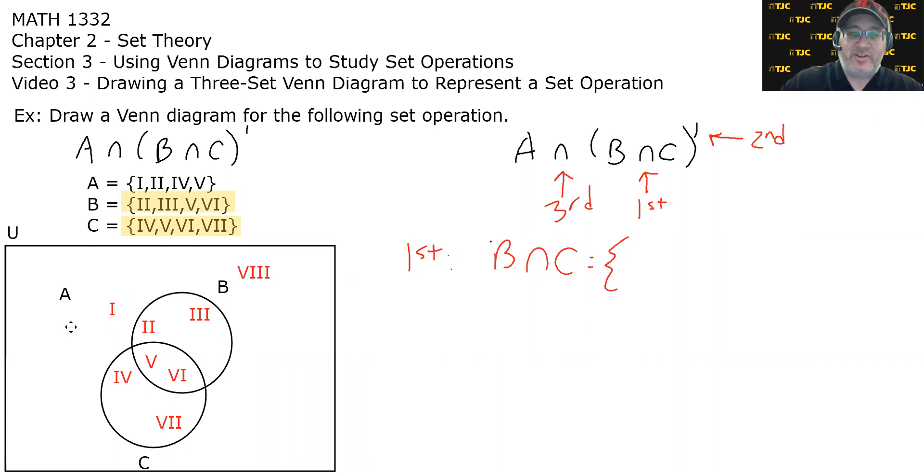Now where do B and C overlap? Regions five and six. So no matter how you slice it, B and C's intersection is region five and region six. Whether you look at it from a visual perspective in the Venn diagram or you look at it from an element level perspective, they have five and six in common.